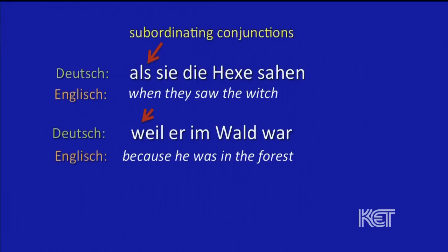Subordinating conjunctions. Right. They start off with subordinating conjunctions, and we actually refer to them as something else at times — those are referred to as verb kickers. Because what do you think they do? Well, if you look at the English verb in the clause, the verb comes after the subject. In German, in both of these, the verb goes... to the end. So those conjunctions make the verb go to the end, and that's pretty much a standard feature of a dependent clause.